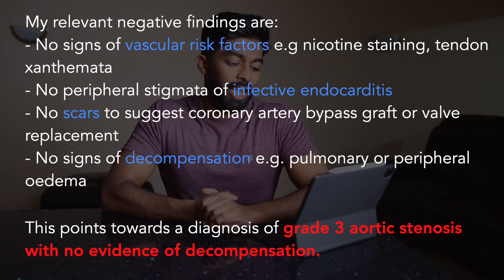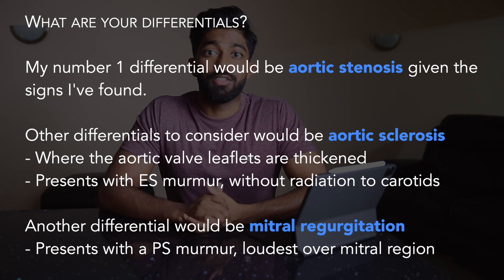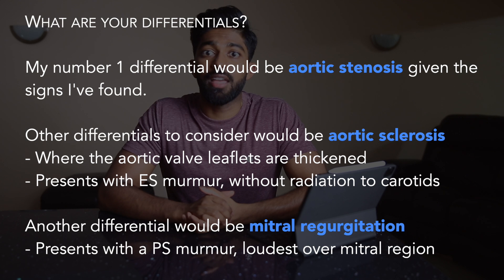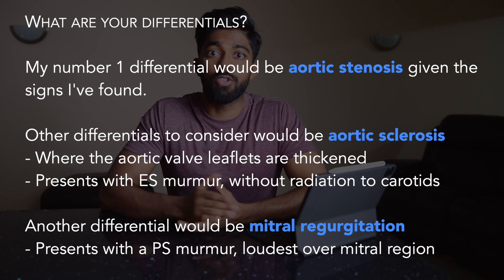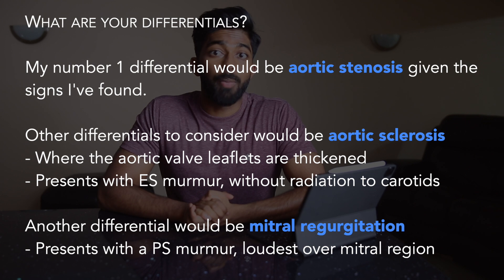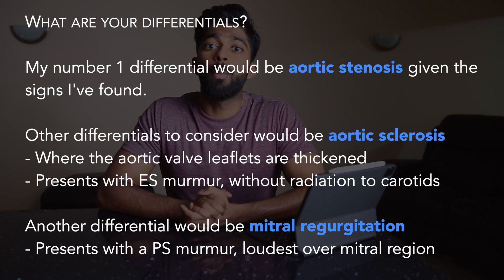This points towards a diagnosis of grade 3 aortic stenosis with no evidence of decompensation. The most likely follow-up question would be: what are your differentials? My number one differential would be aortic stenosis given the signs found. I would also consider aortic sclerosis — where the aortic valve leaflets are thickened — where I'd also expect an ejection systolic murmur but no radiation to the carotids because there's no outflow obstruction. Another differential would be mitral regurgitation, although this would more likely present with a pan-systolic murmur loudest over the mitral region.